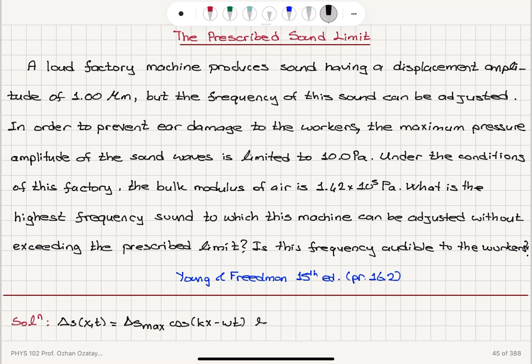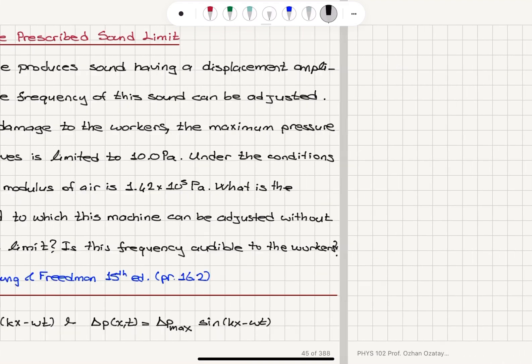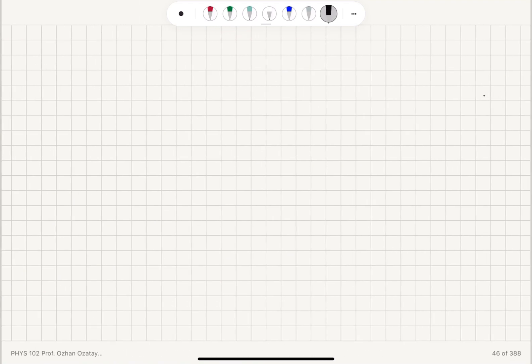And equivalently, we can also describe it in terms of pressure. Delta P as a function of x and t is equal to maximum pressure, the pressure amplitude, sine kx minus omega t. So we have a 90 degree phase difference between the pressure and displacement pictures of the sound wave.